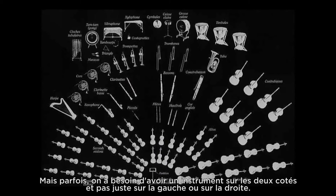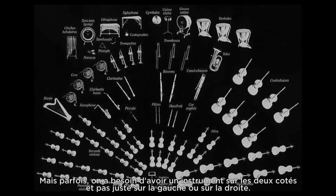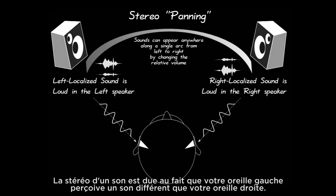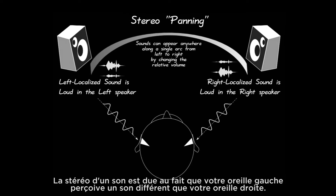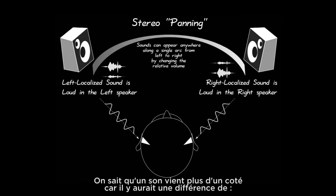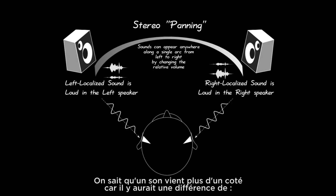But sometimes you need a particular sound to be on both sides, instead of just left or right — you just need a wider sound. So here are six tips to make your sound wider. The stereo of a sound is due to the fact that your left ear hears something different than your right ear. You know a sound is coming from a side because it reaches your ears at different volumes and different times — if a sound comes from the right, it takes a slightly longer time to reach your left ear. It is also composed of different frequencies depending on how the sound bounces around before reaching each ear.